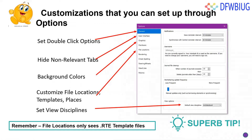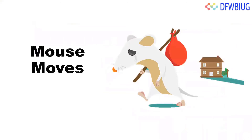In my case I have pyRevit — you can create shortcuts to any add-ins you have. Other customizations: under File > Options you can set up double-click options, customize background colors, hide non-relevant tabs (e.g., hide the Structural tab if you don't need it), set up view disciplines, and set up file locations. Note: file locations will only see RTE files, not a sample Revit project file you may have created.